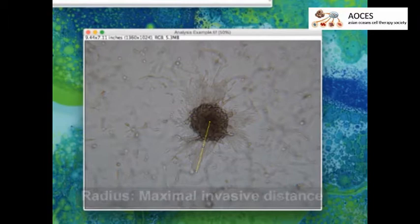To determine cell distance from the edge of the spheroid, use the Straight Draw tool to mark the radius. Then click Analyze in the top menu, followed by Measure to display the length measurement.